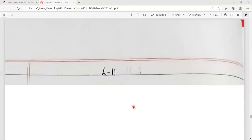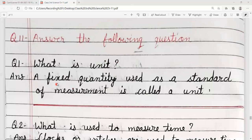Next question is answer the following question. Number 1, what is unit? Unit kya hai? A fixed quantity used as a standard of measurement is called a unit. Hum jab kisi bhi cheez ka measurement karte hain toh uske ek fixed quantity hoti hai use hum kehte hain unit.